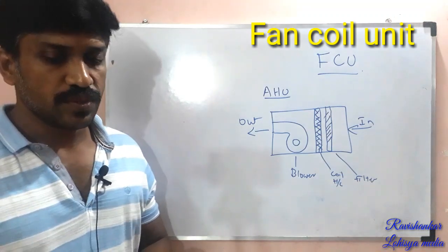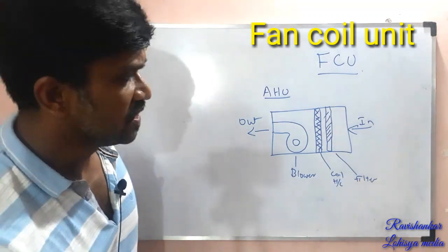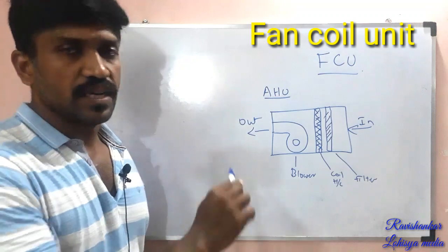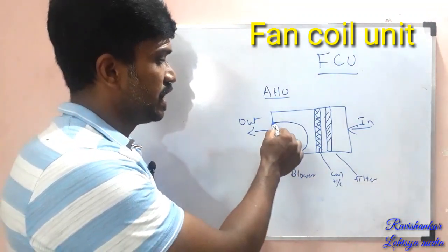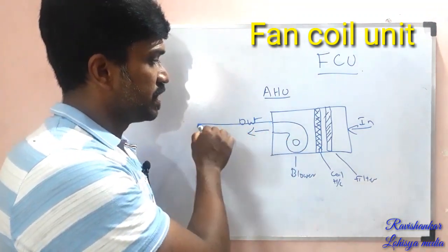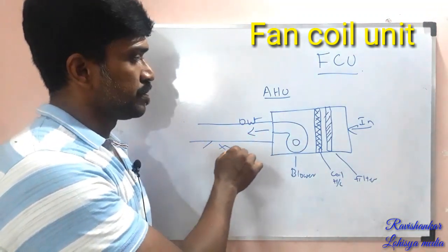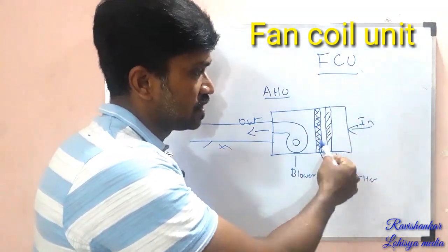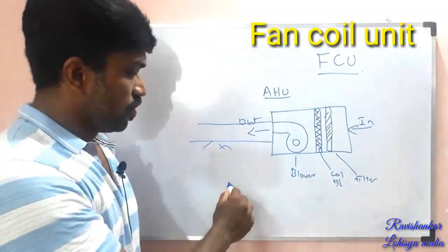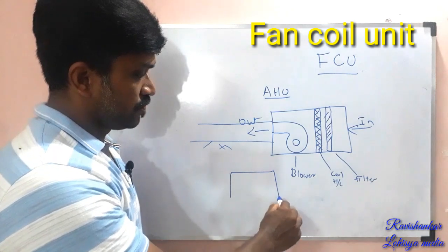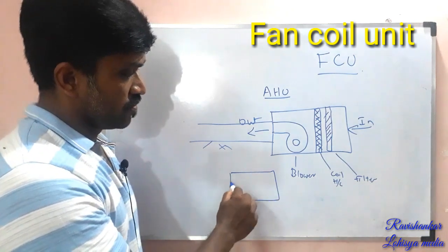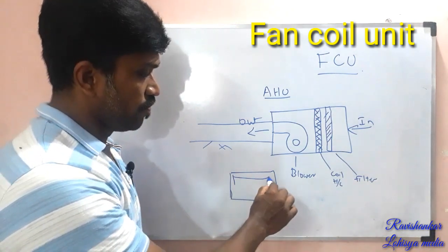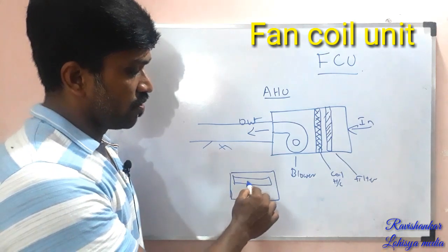This is the FCU — it follows the same concept. This is the ducting. This is the same concept: a small room box with a blower.